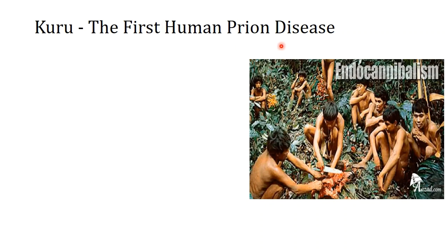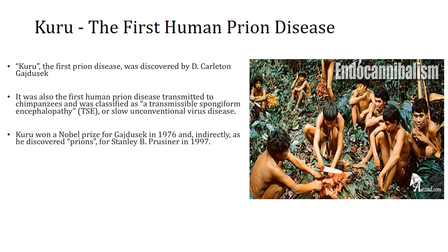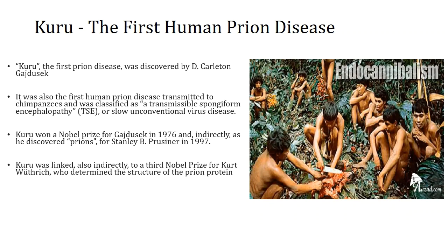Kuru is the first human prion disease discovered and is associated with endocannibalism. It was discovered by D. Carlton Gajdusek in 1976, for which he was awarded a Nobel Prize. It was the first human prion disease transmitted to chimpanzees, classified as transmissible spongiform encephalopathy — a term that now encompasses a range of other prion diseases. Kuru also indirectly led to another Nobel Prize for Stanley B. Prusiner, who coined the term prions in 1997, and was linked to Kurt Wüthrich who determined the structure of the prion protein.